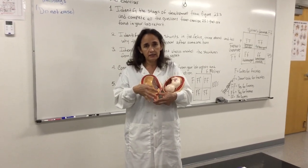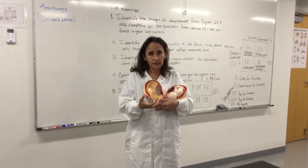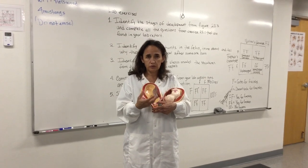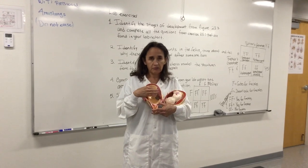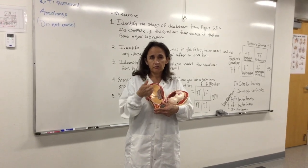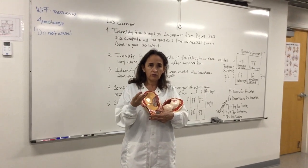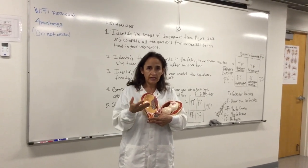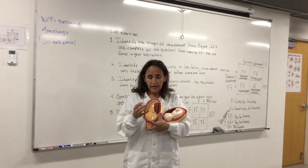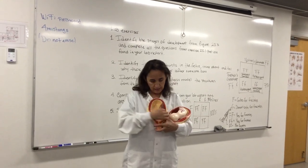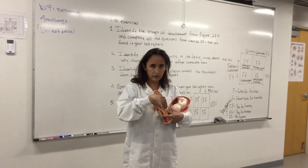Here is the placenta. The placenta will help to maintain the pregnancy because progesterone, which is the hormone of pregnancy, is first produced by the corpus luteum in the ovaries. Then as the placenta is developing, the placenta starts secreting progesterone, estrogens, human placental lactogen, human chorionic gonadotrophin hormone, and also relaxin. The placenta has two sides: the maternal side, which is rough, and it has an embryonic or fetal side, which is smooth.